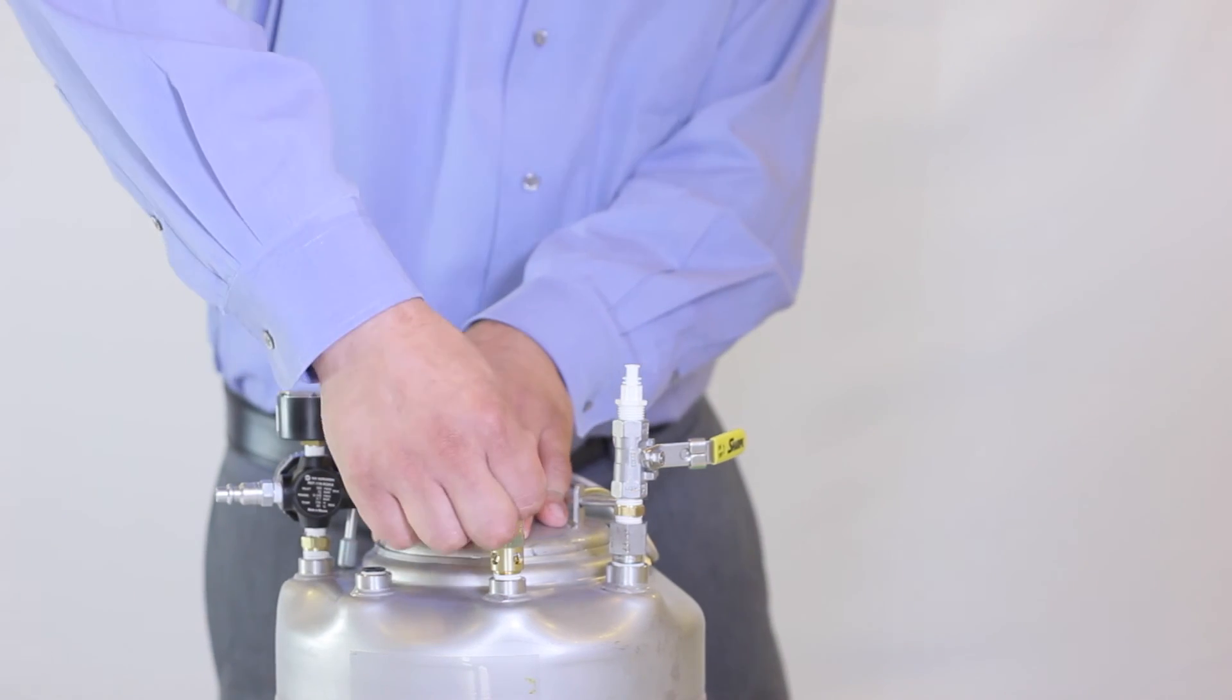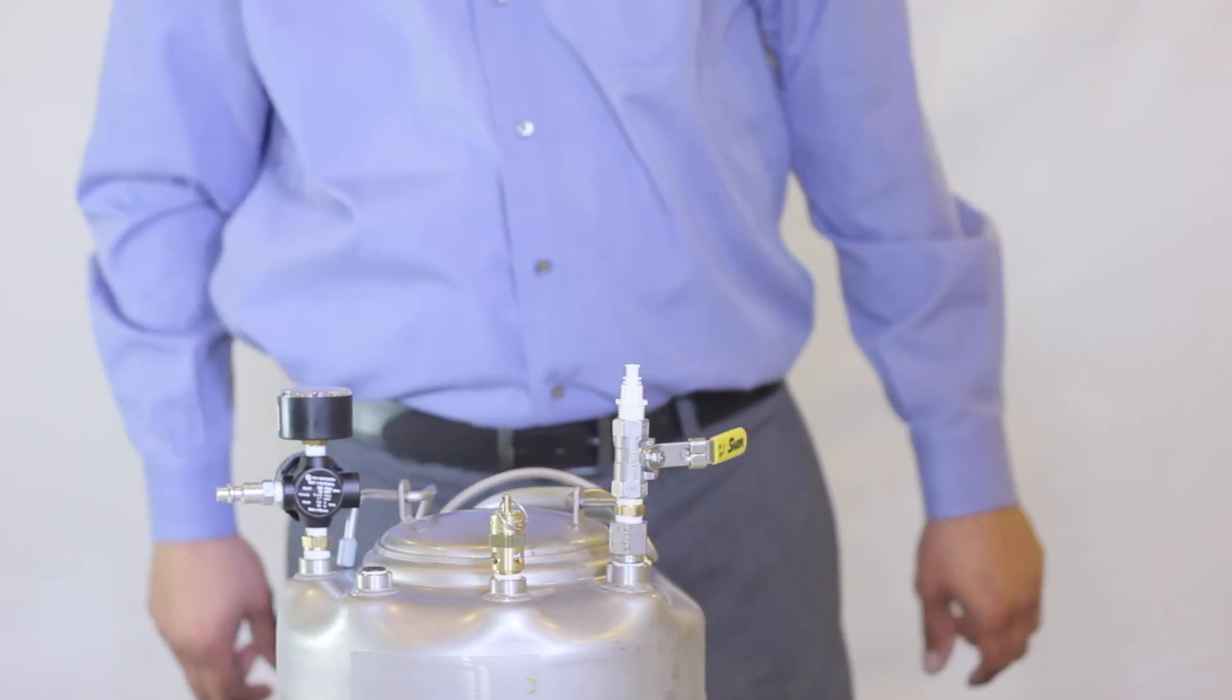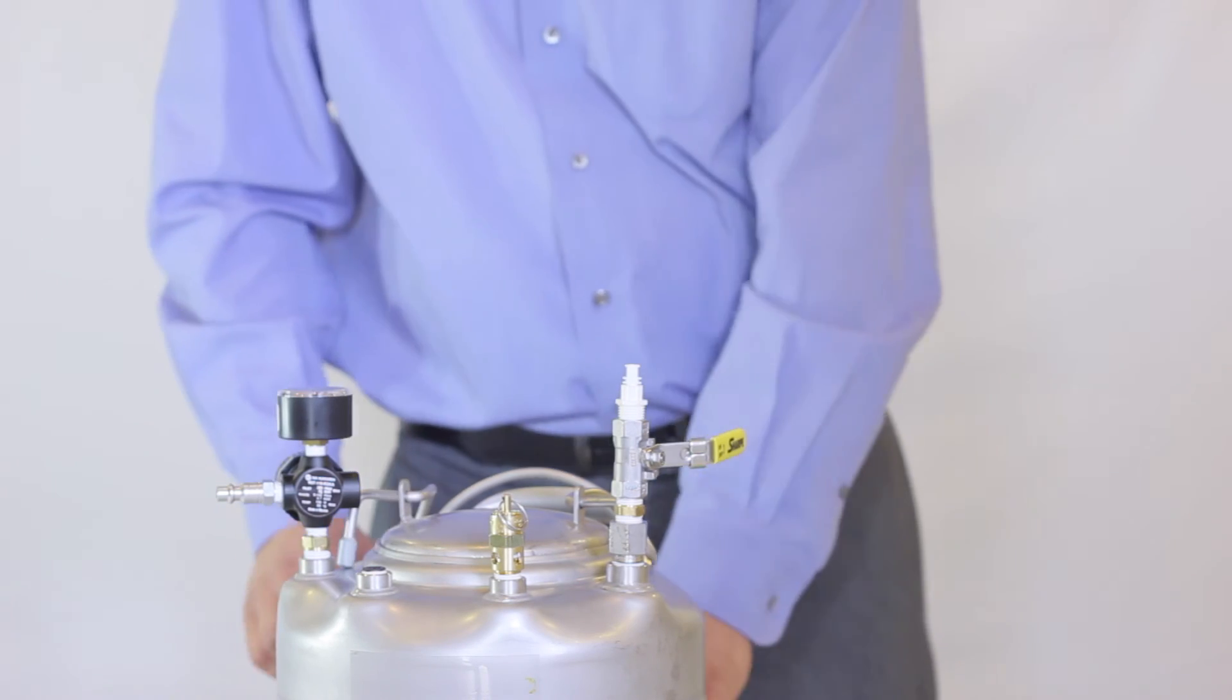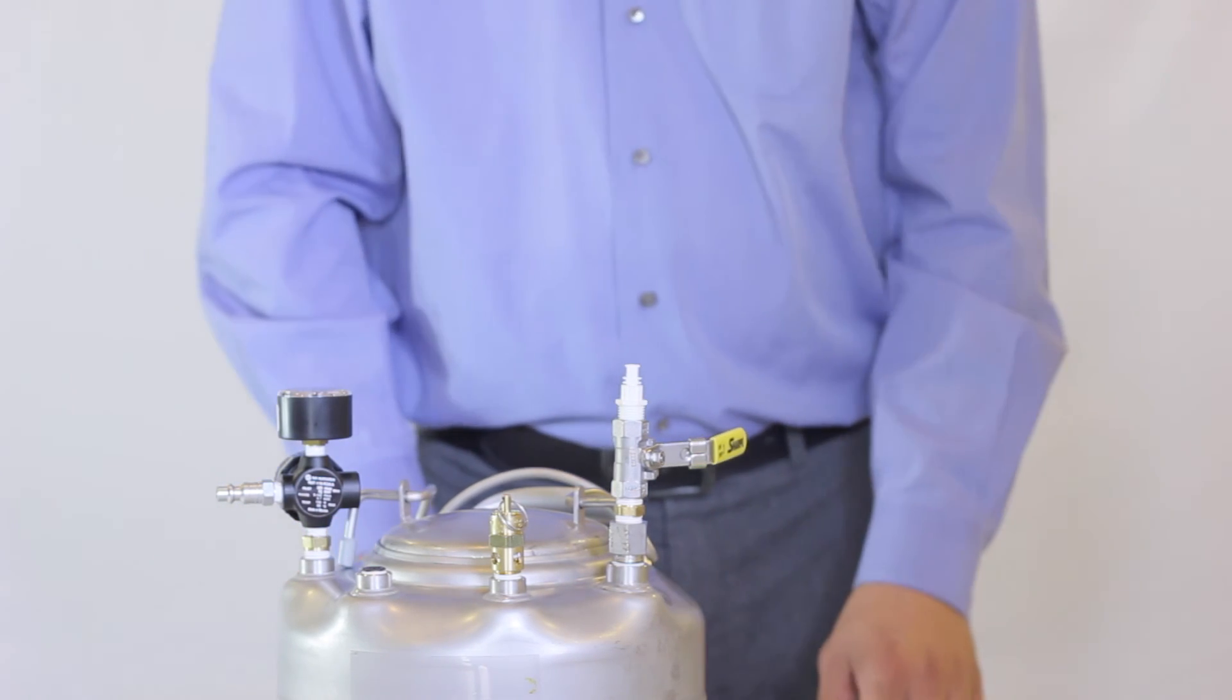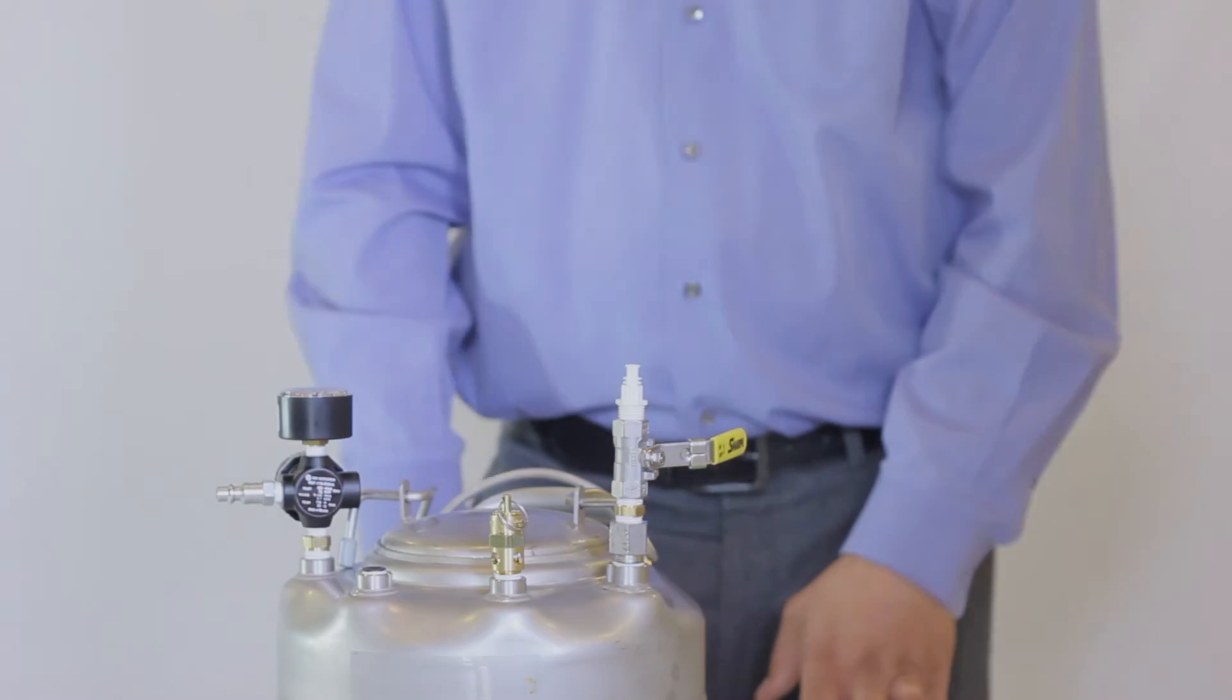Disconnect the air source and release the safety pop-off valve to depressurize the tank. The system is self-contained and does not need to be opened other than for cleaning or recycling.